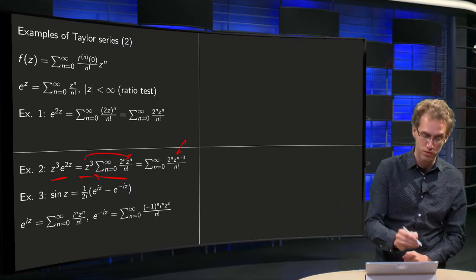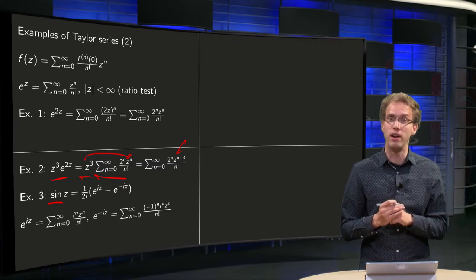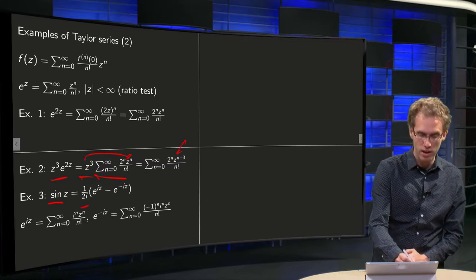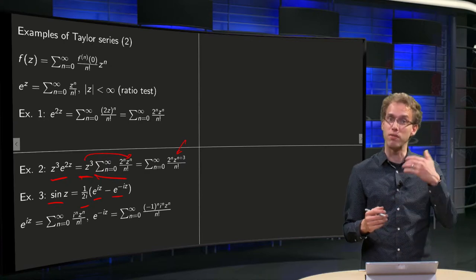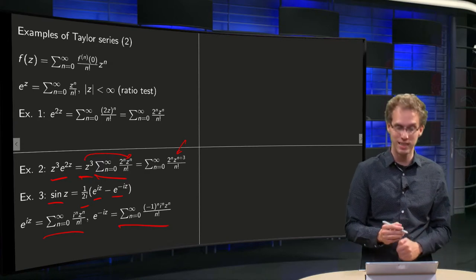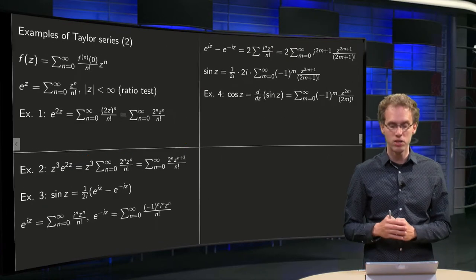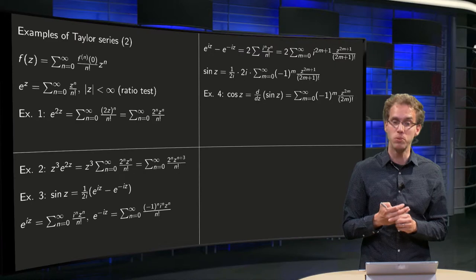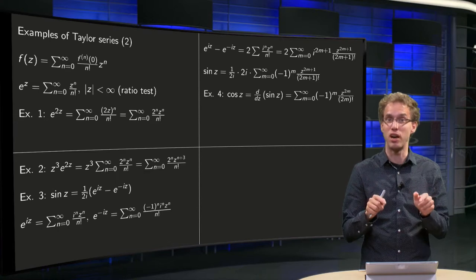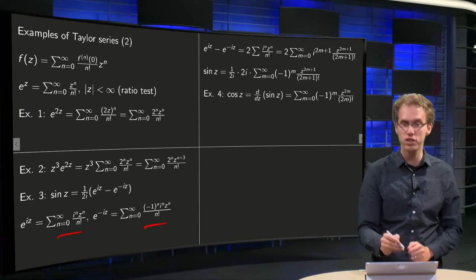Then the third example: the Taylor series of sine z. Of course we can use the same trick as for real functions, but we can also use a substitution, because we know that sine z equals 1 over 2i times (e to the power iz minus e to the power minus iz). We can find the power series of e to the power iz and e to the power minus iz — the only difference is a factor of minus 1 to the power n — so if we subtract the two, all cases where n is even will cancel out, because then minus 1 to the power n equals 1 and both series are the same, giving 0.